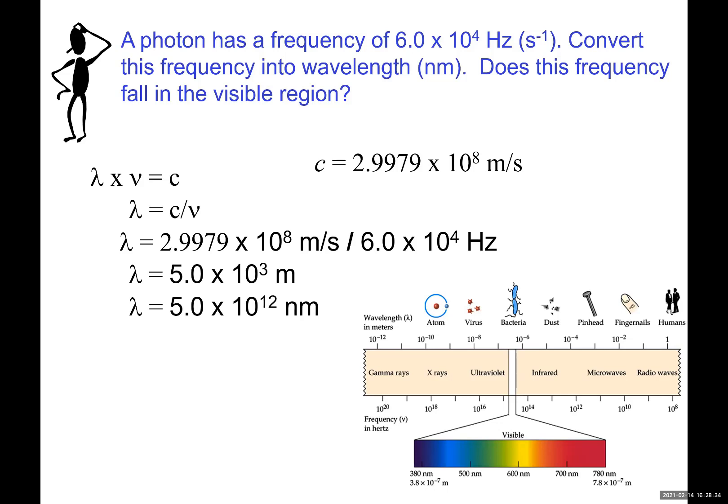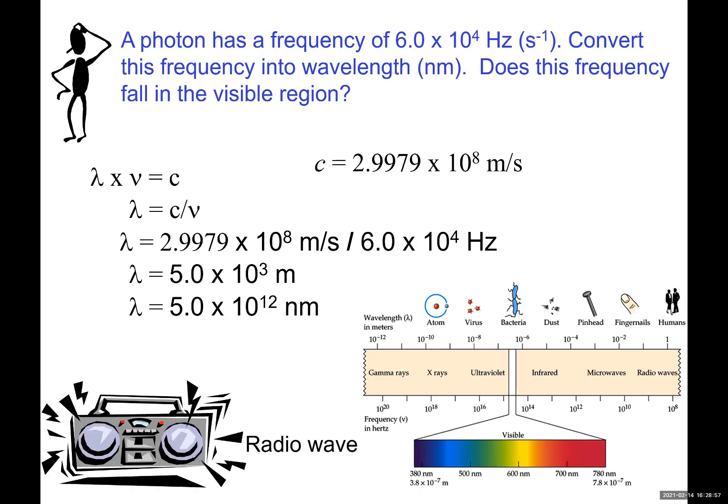Since we have the information in nanometer, and the problem was asking wavelength in nanometer, I'm going to convert this to nanometer. Every meter is 10 to the power of 9 nanometer. So you use that as a conversion factor. So you have the wavelengths.